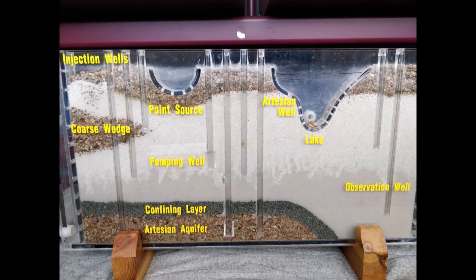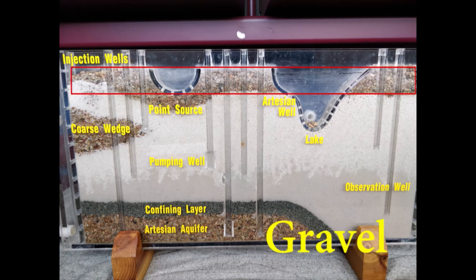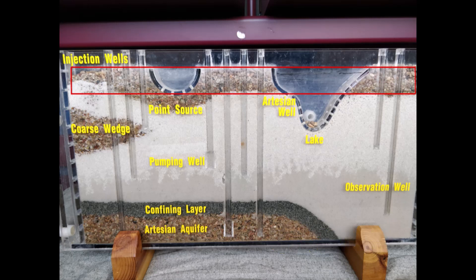What is this first layer here? It is gravel. It has the largest sized particles, the biggest pore space, and it is the most permeable or porous layer in our model.